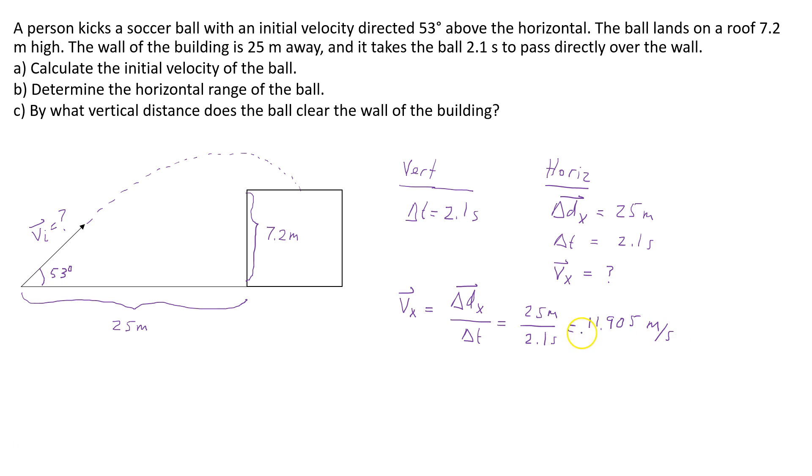So that's the horizontal component of the velocity of the ball. Now that I have the horizontal component of the velocity of the ball, I can use that to find the initial velocity of the ball. Remember that the horizontal velocity of the ball never changes.